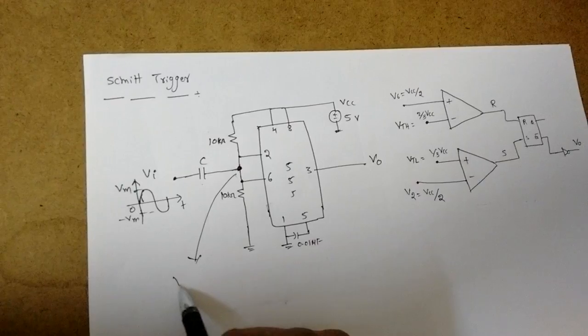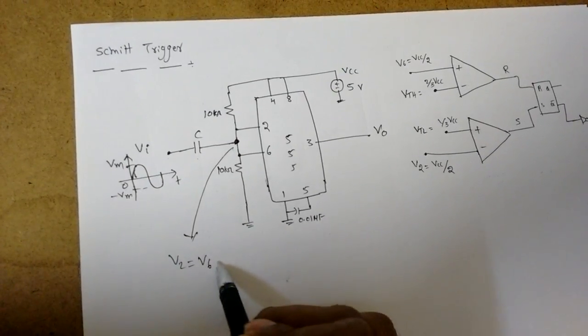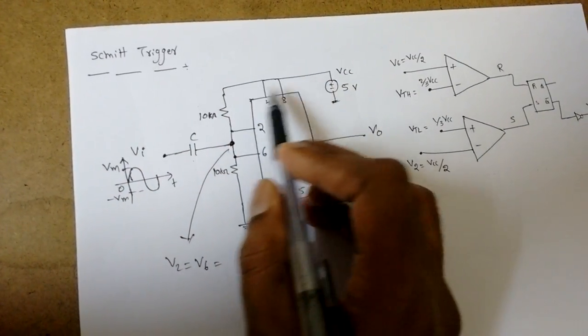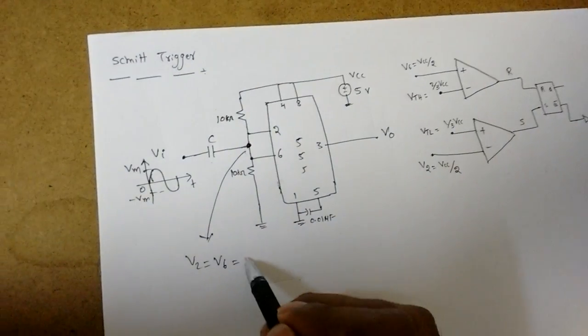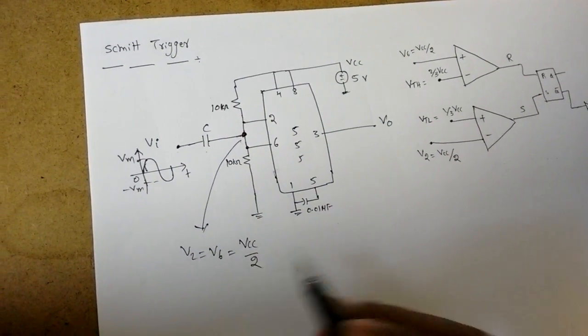Whenever capacitor is open circuit, the voltage V2 is equal to V6. Since there is VCC and two equal resistors, it will be simply VCC by 2 by voltage division principle.